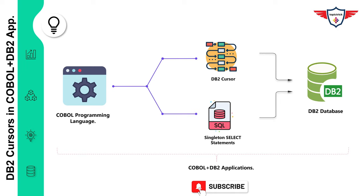When using a singleton select statement, the result is returned to the application program with the help of host variables. DB2 uses SQL return codes to indicate whether the recent execution of an SQL statement was successful or had failed due to some internal error. In nutshell, a COBOL program that accesses or stores data in the DB2 database using embedded SQL statements is called a COBOL DB2 application or program.